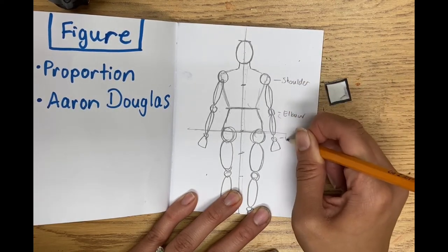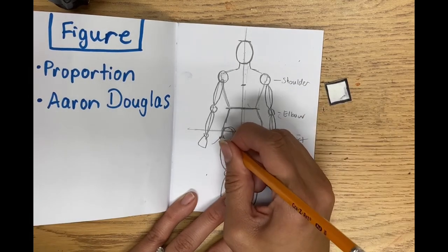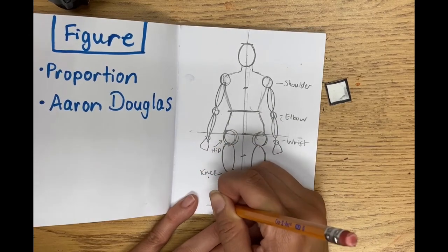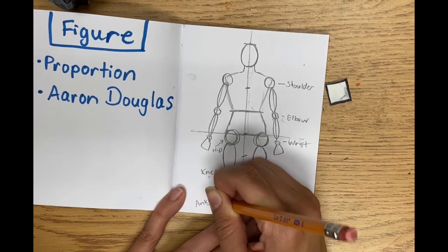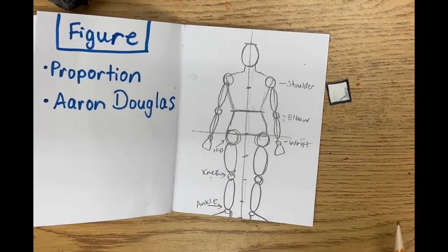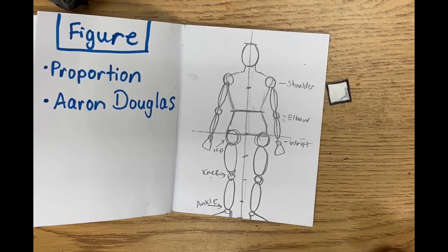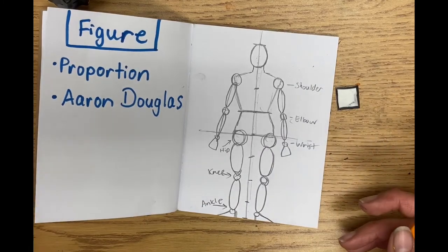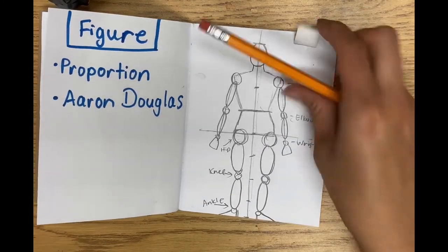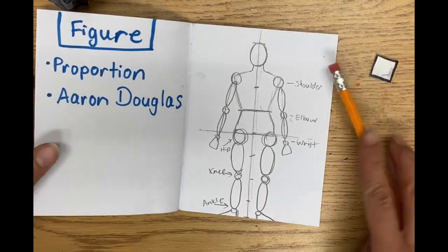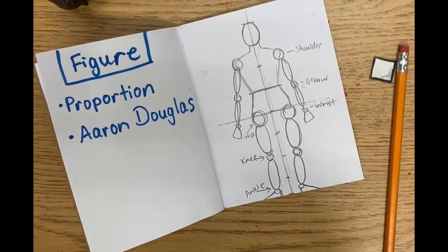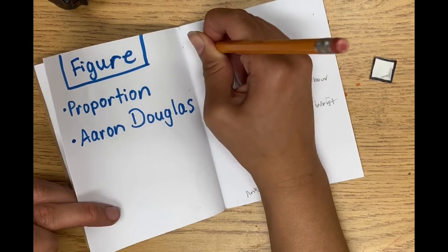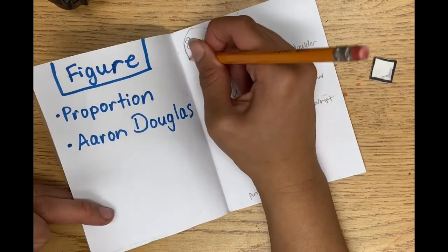Shoulder, elbow, wrist, hip, knee, ankle. Take a few minutes to adjust these when needed. I want you to leave lines on because this is a diagram of the human figure. On the other side, or on the side, you can write eight heads tall because you are human and you are eight heads tall.